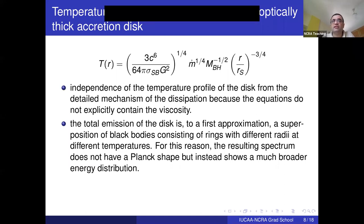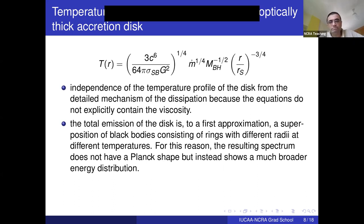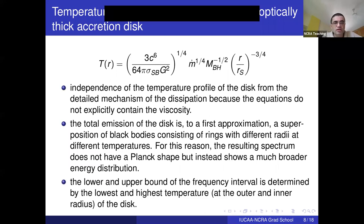This is the most direct explanation for why AGN emit power in X-rays, UV, optical, and near-infrared — it's coming from different layers. The lower and upper bound of the frequency interval is determined by the lowest and highest temperatures of the disk.